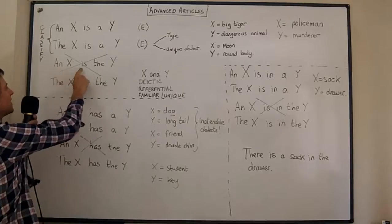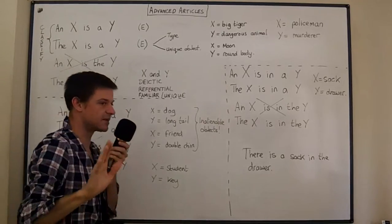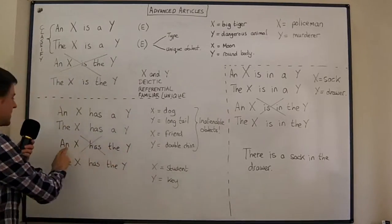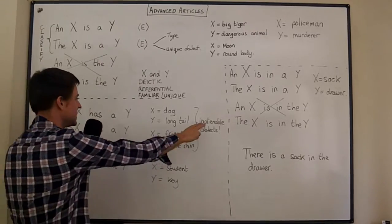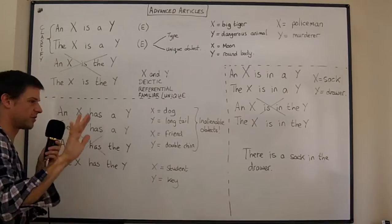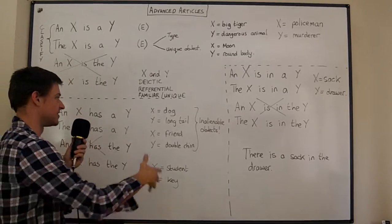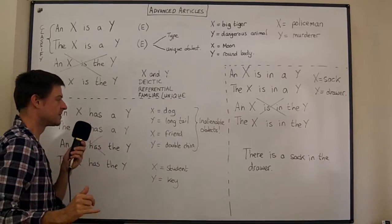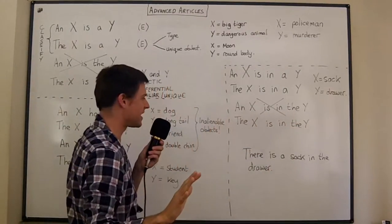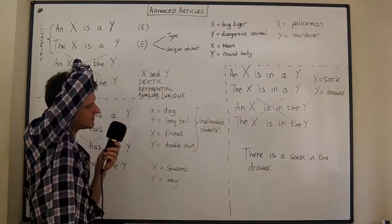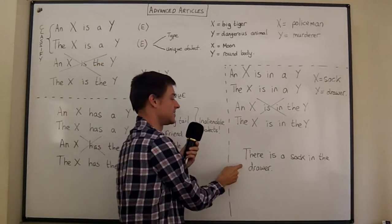Namely, an X is the Y will pretty much always be wrong. An X has the Y is going to be wrong if it's an inalienable object - we spoke about this before because that means it's an existential clause. And also an X is in the Y is very rare.